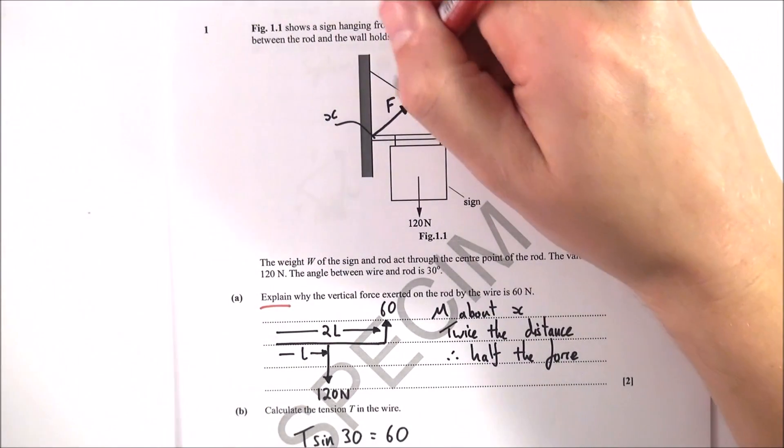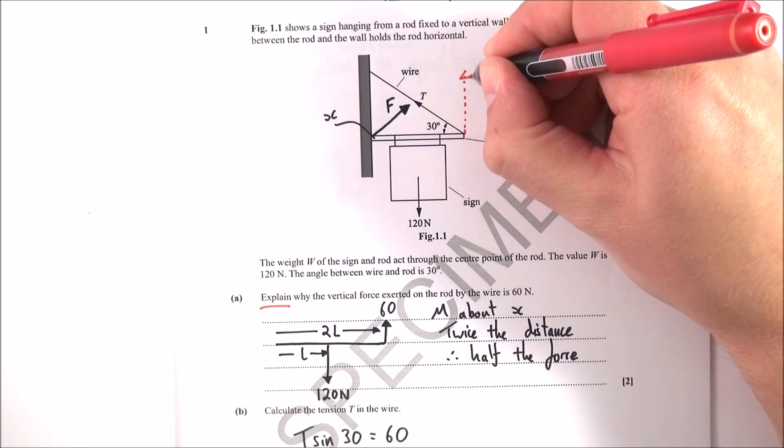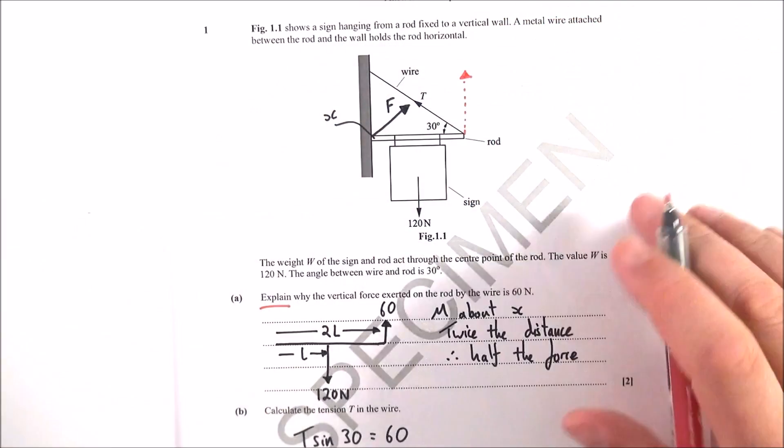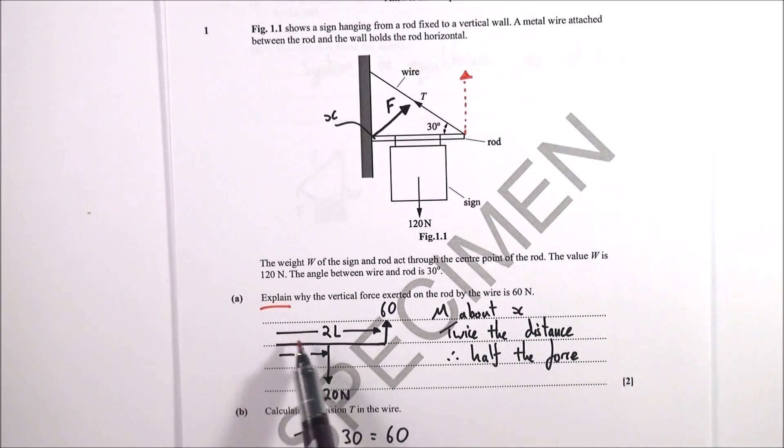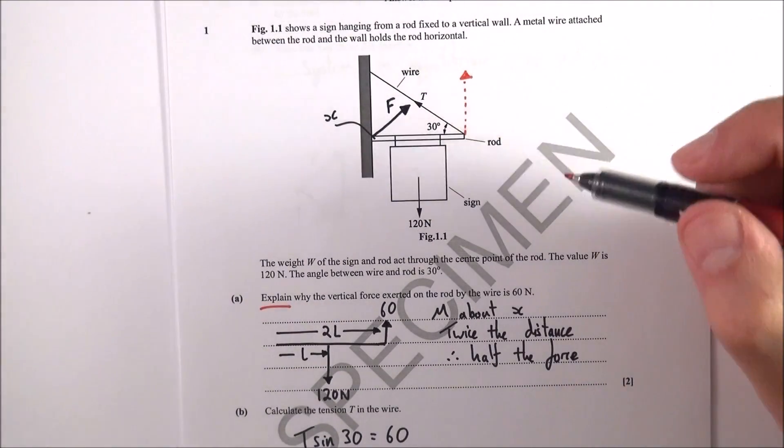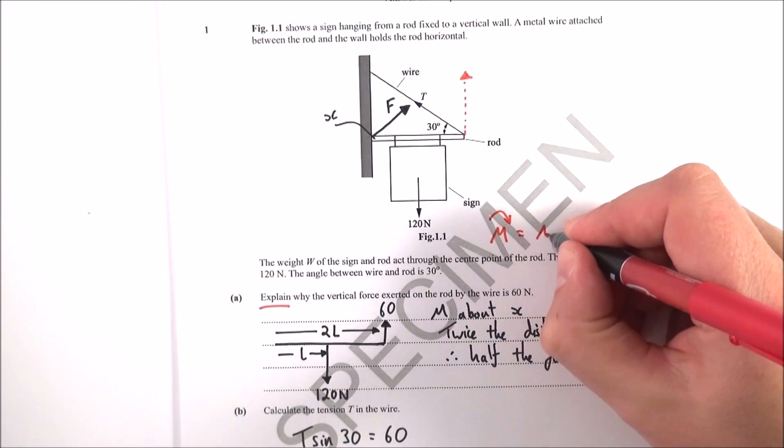So although the tension is acting in this direction there's also going to be a vertical component of the force which is acting up like this. And basically what I said was that if you've got the rod which is length perhaps maybe 2L, the weight that acts at the midpoint is 120 newtons acting at a length L. We know that it's in equilibrium and that means the sum of the moments is equal to zero.